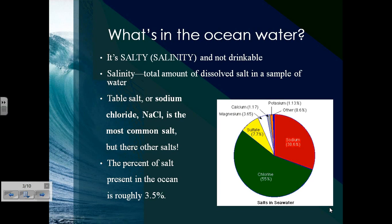Table salt, or sodium chloride, represented by the chemical formula NaCl, is the most common salt. You can see that on the pie chart to the right — it's combined with sodium and chlorine, with sodium being red at 30.6% and chlorine at roughly 55%. Together, they make up the most common combination in our ocean water.